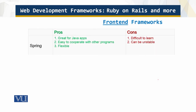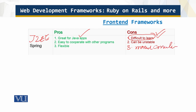Next is Spring, whose main purpose is to simplify the creation of J2EE enterprise applications. It provides a framework for future applications with strict architecture and simplifies the development process a lot. However, it is difficult to learn — Java has a steep learning curve and Spring is no different. It can also be unstable, and it is known for weakened dependencies between objects and issues with manual object connection.